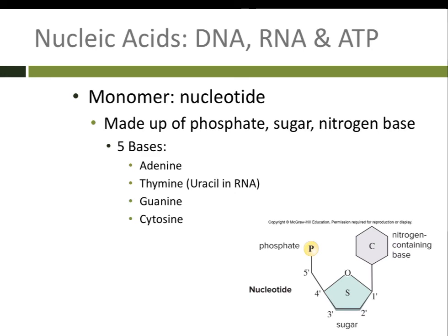Our third macromolecule is nucleic acids. There are three types we'll talk about: DNA, RNA, and ATP. The monomer is called a nucleotide, made up of a phosphate, a sugar group, and a nitrogen-containing base. We have five possible bases: adenine, thymine, guanine, and cytosine. In RNA, instead of thymine, we have uracil. That gives us our five different nitrogen-containing bases.